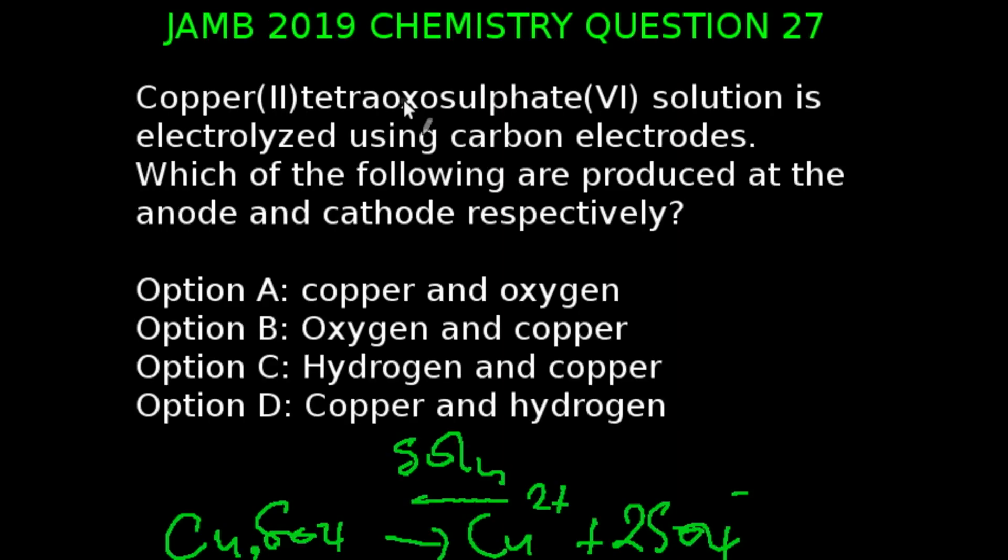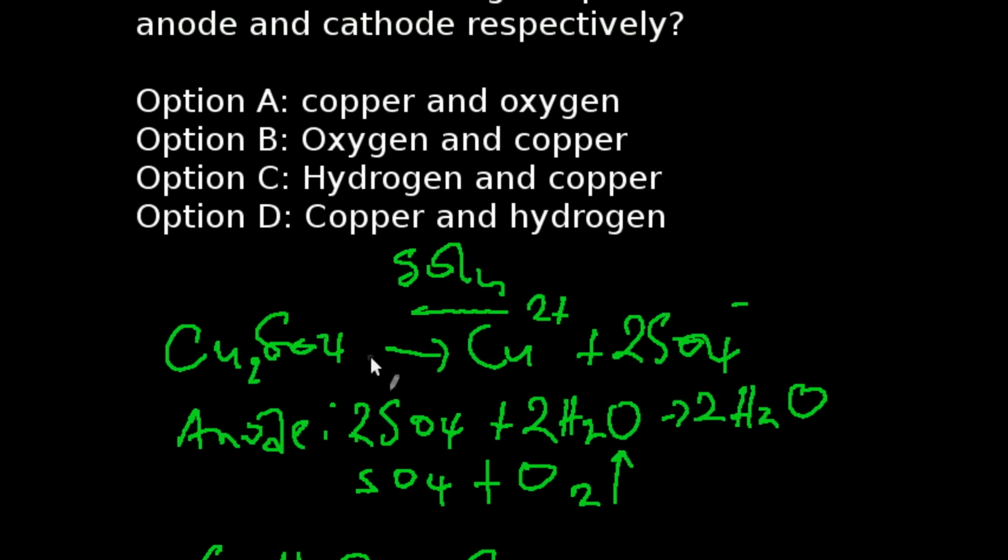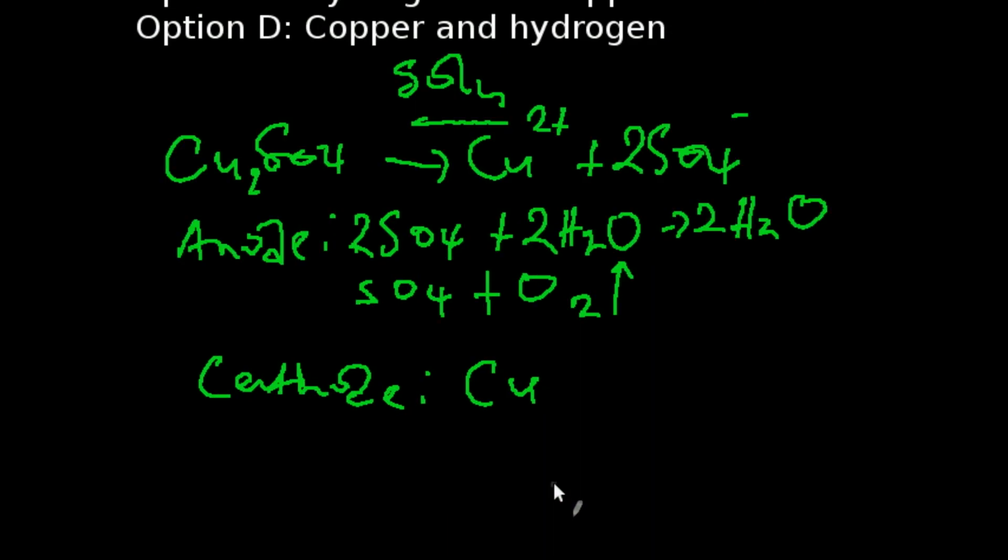Question 27 of JAMB 2019 Chemistry Examination. Copper-2-Tetraoxosulphate-6 solution is electrolyzed using carbon electrodes. Which of the following are produced at the anode and cathode respectively? The correct answer to this question is Oxygen and Copper. During electrolysis, Copper-2-Tetraoxosulphate-6 is dissociated into Copper ions and Sulphate ions. And at the anode, SO₄ reacts with water to liberate oxygen. And at the cathode, Copper is deposited.